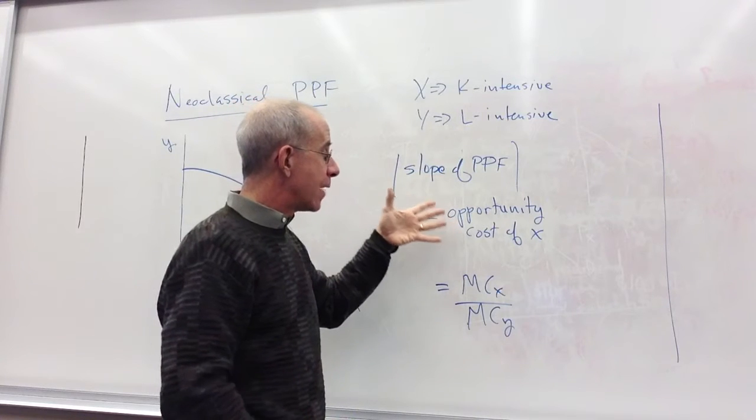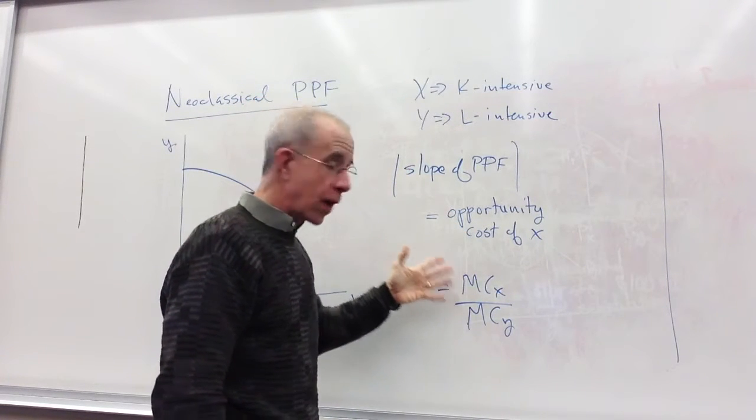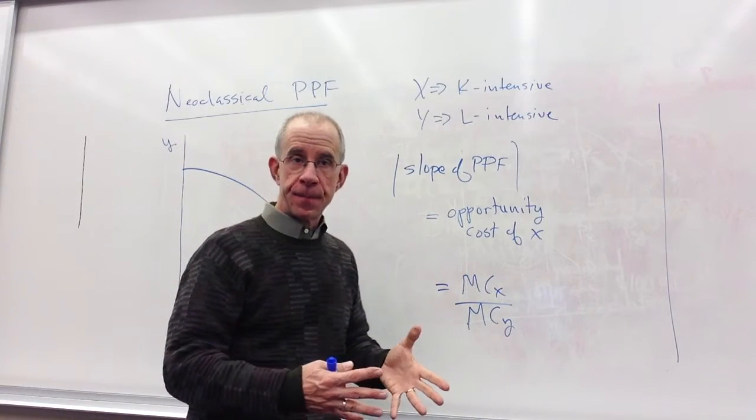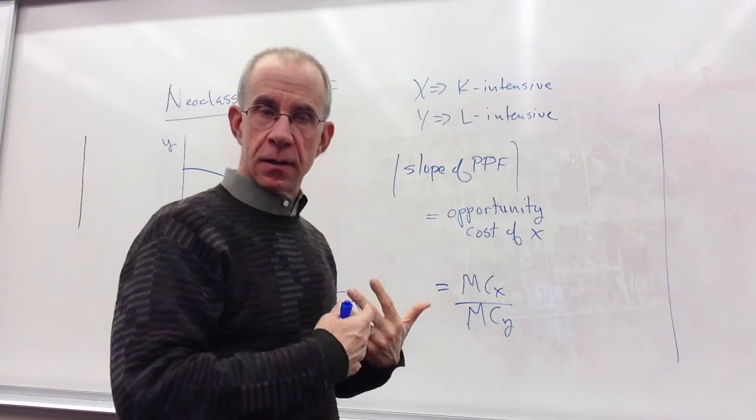In other words, we have an increasing opportunity cost of X. The ratio of the marginal cost of X compared to the marginal cost of Y is increasing. So that's just the basic relationship looking at the graph.